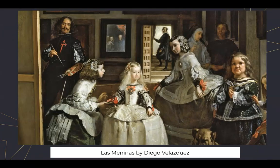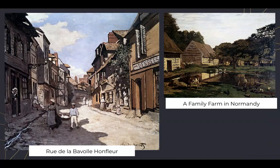After the Renaissance, many artists continued to use the rules of linear perspective, notably Diego Velázquez in his painting Las Meninas, and Claude Monet with the paintings A Family Farm in Normandy and Rue de la Bavolle en Fleur.